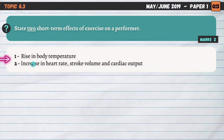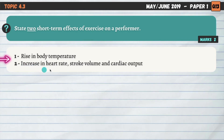I went for a rise in body temperature — that is a short-term effect of exercise. When you start to exercise, your body temperature increases, partly because we're producing more energy so metabolism produces heat, but also our muscles themselves produce heat as they contract. The second short-term effect I went for is an increase in heart rate, and not just heart rate but also stroke volume — the amount of blood ejected from the heart per beat — and cardiac output as well.